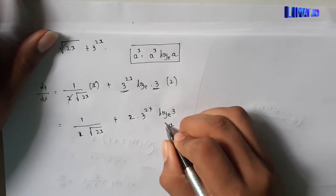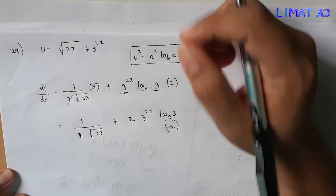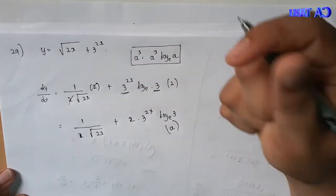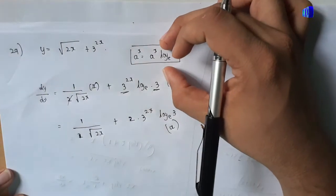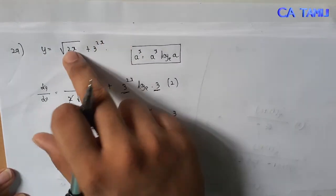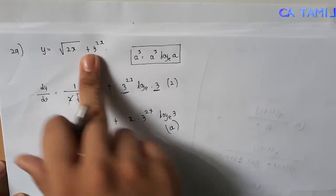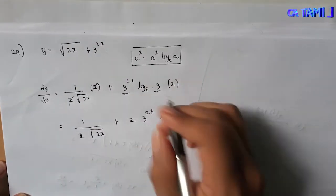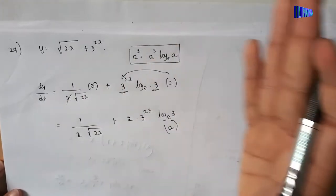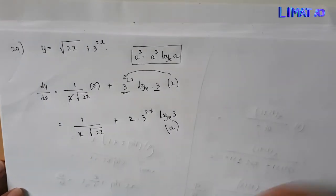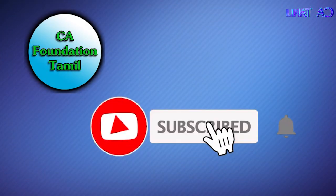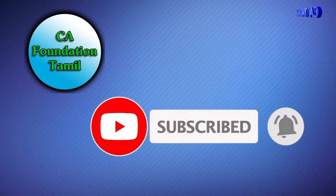This is option A, so option A will be satisfied. If you want to see the formula: d/dx of a^x = a^x · log e·a. So let's do this. d/dx is 1/(2√x). You can see this formula. So the option is A. Thank you very much.